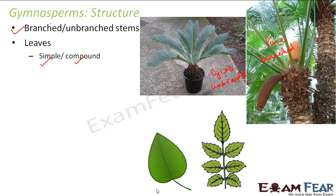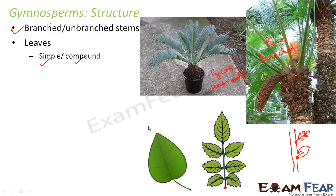For a simple leaf, the axillary bud is present at the axil of that leaf — if there is a branch and a simple leaf, the axillary bud appears there. For a compound leaf, the axillary bud is at the axil of the whole compound leaf and not at the axils of the individual leaflets. Examples of plants with simple leaves are mango and guava; examples with compound leaves are rose and coriander.